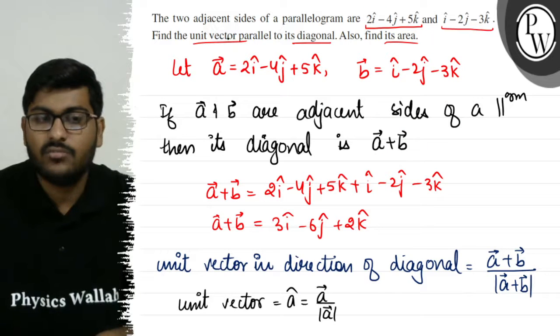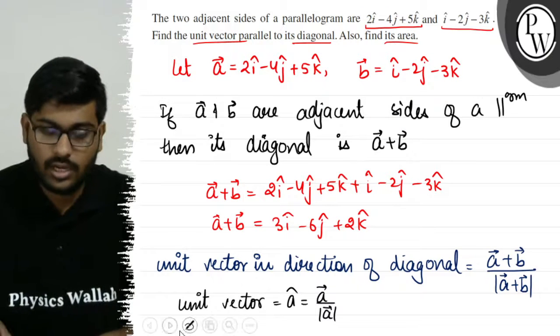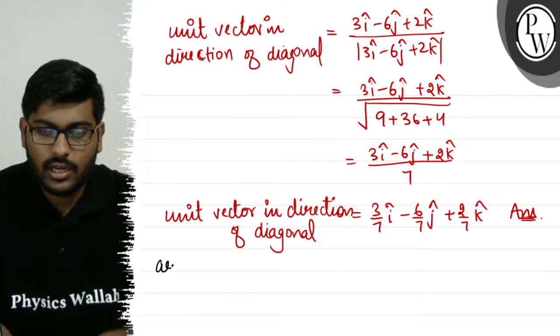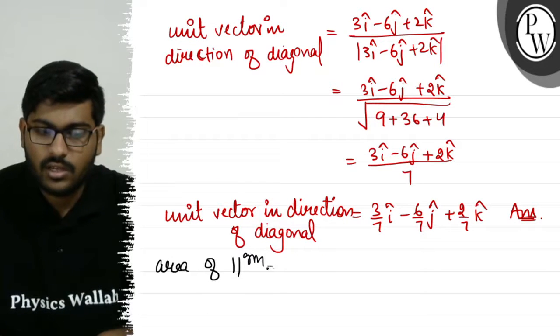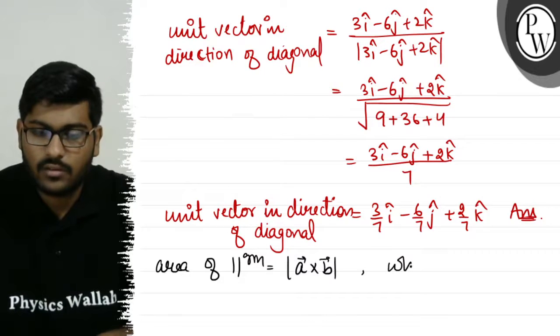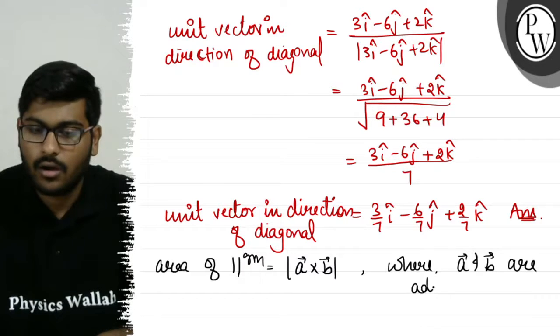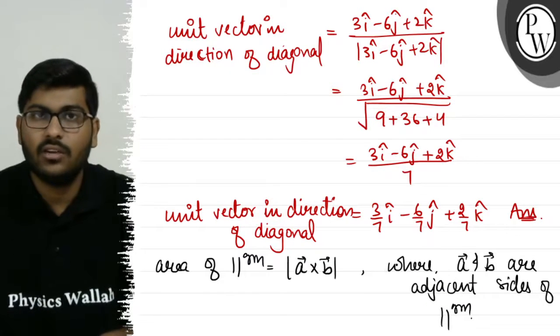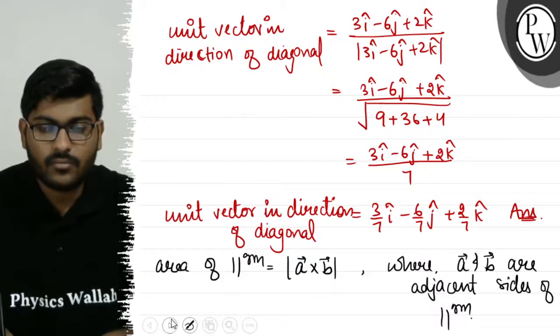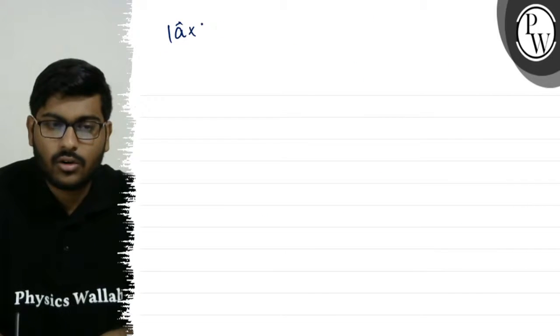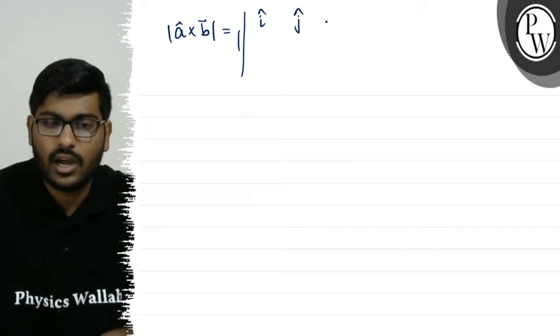The other part asks us to find the area. Now as we know, area of parallelogram is represented by modulus of A vector cross B vector, where A vector and B vector are adjacent sides of the parallelogram. So we need to find the modulus of the determinant.